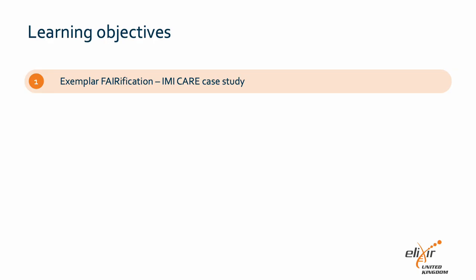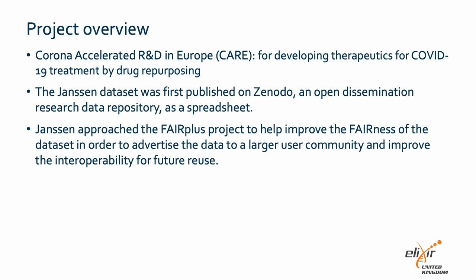You will see how the verification framework can be practically applied in a task using an IMI case study. The IMI CARE project was initiated in response to the COVID-19 pandemic with the goal to deliver treatment for COVID-19 and future coronavirus outbreaks. The Janssen dataset was first published as a spreadsheet on Zenodo, an open generic research data repository. Janssen approached the FairPlus project to help improve the FAIRness of the dataset in order to advertise the data to a larger user community and improve the interoperability for future reuse.